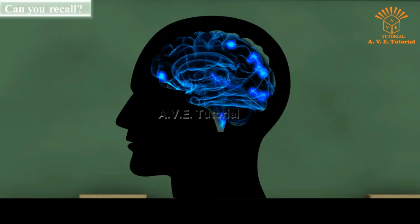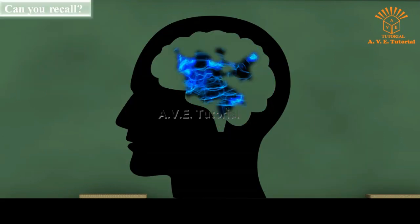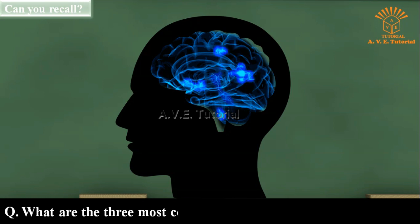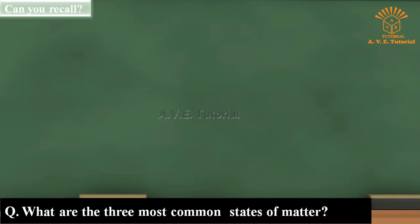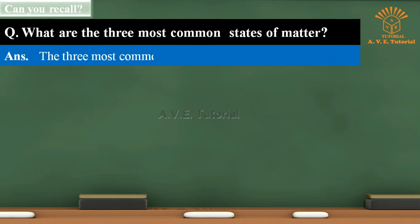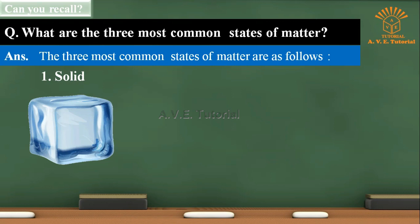Can you recall? Question: What are the three most common states of matter? Answer: The three most common states of matter are as follows: one, Solid; two, Liquid; three, Gas.